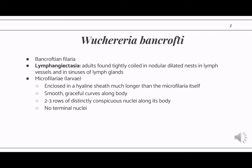The larvae of our filarial worms are called microfilariae — these are their L1 larvae. For Wuchereria, their microfilariae are sheathed in a hyaline sheath, and this hyaline sheath would remain unstained or only very lightly stained when we do our blood smears. The microfilariae also exhibit smooth, graceful curves along their bodies, and they have two to three rows of distinctly conspicuous nuclei. At the tail portion, we won't be able to appreciate any terminal nuclei — it's just an empty space.